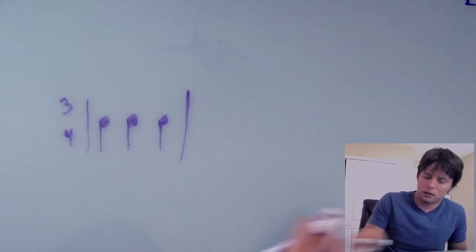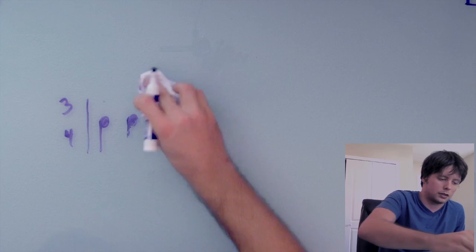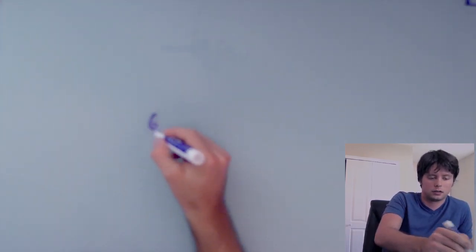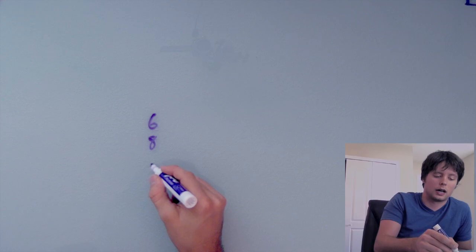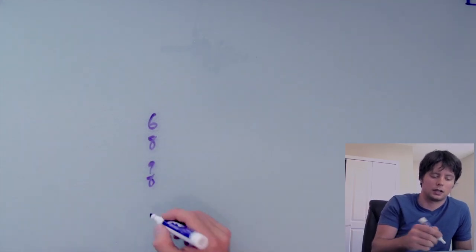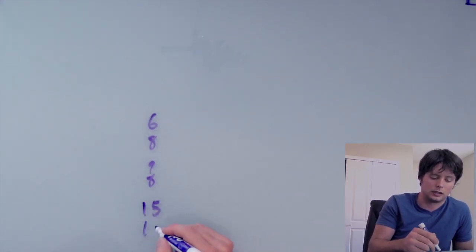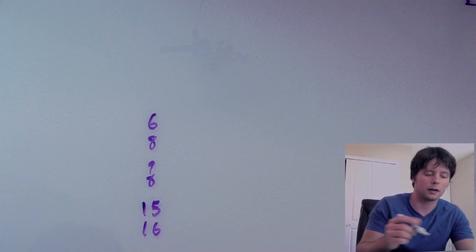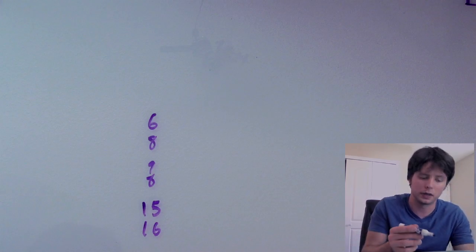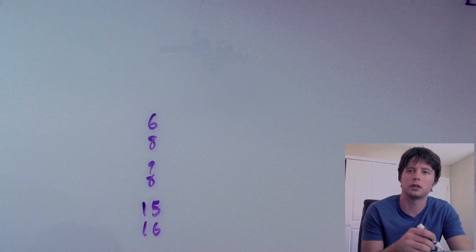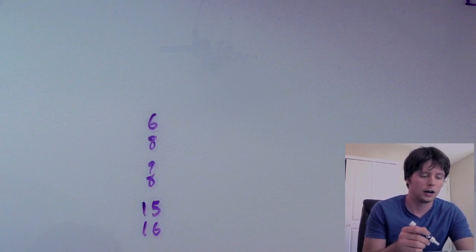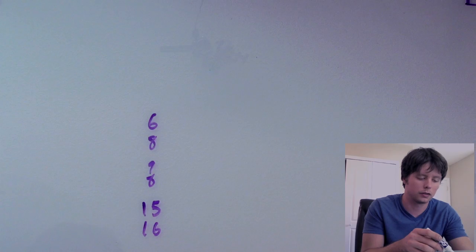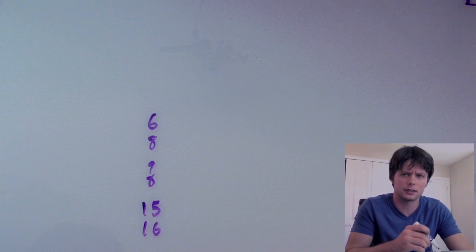Now, there are others, other time signatures, like 6-8, or maybe 9-8, or again, that really weird one I showed you, 15-16, where you would definitely not be counting out six beats or nine beats or, God forbid, 15 beats in a measure. 6-8 actually has two beats in it. 9-8 has three. And 15-16, we'll talk about later.